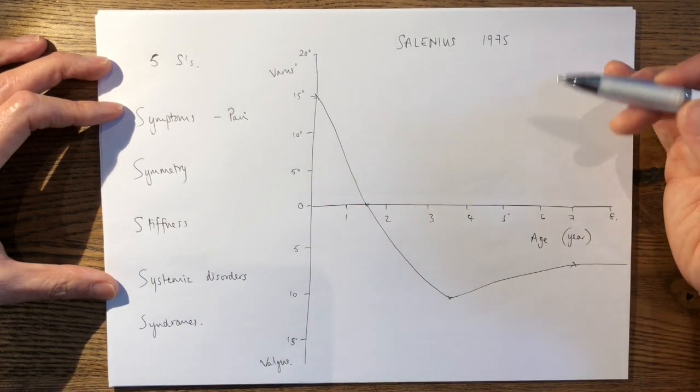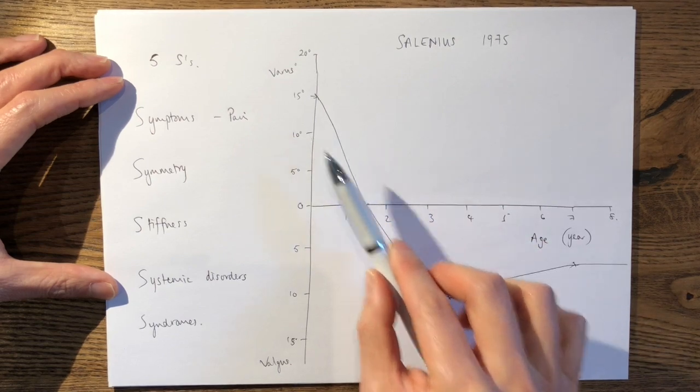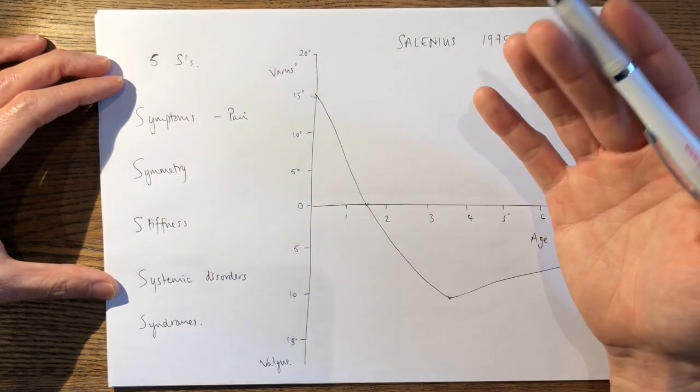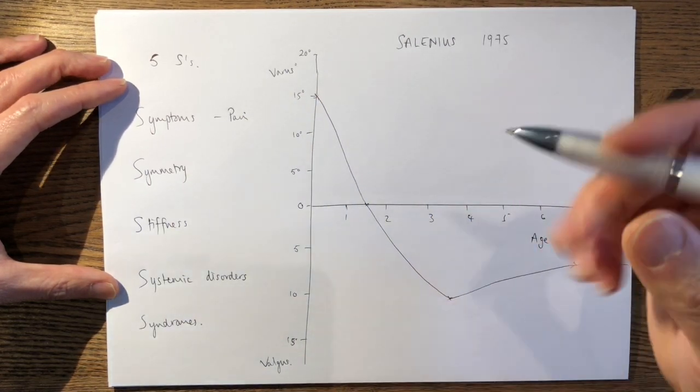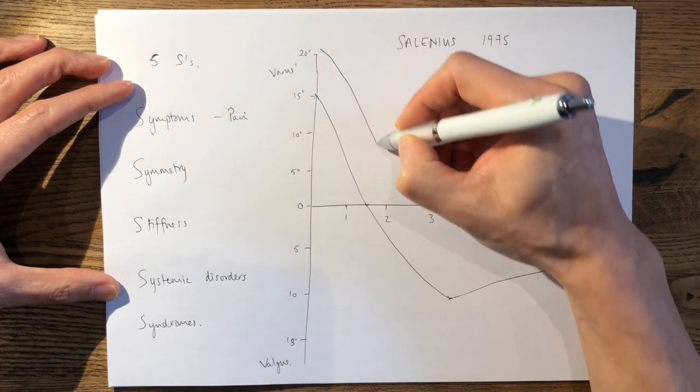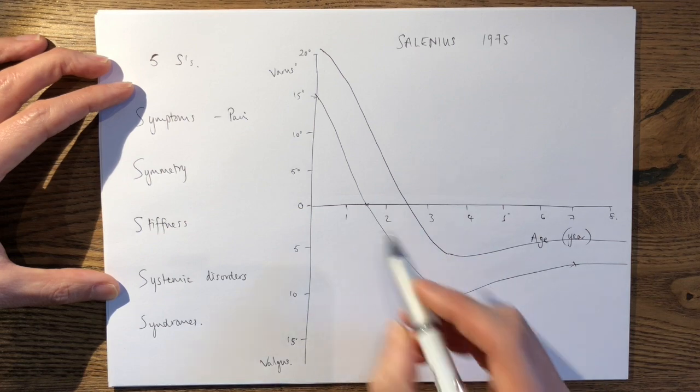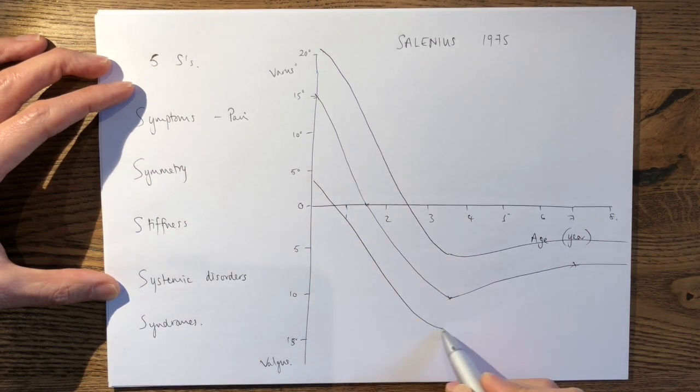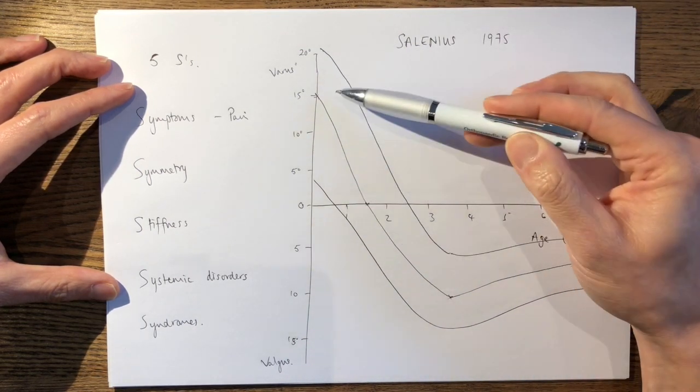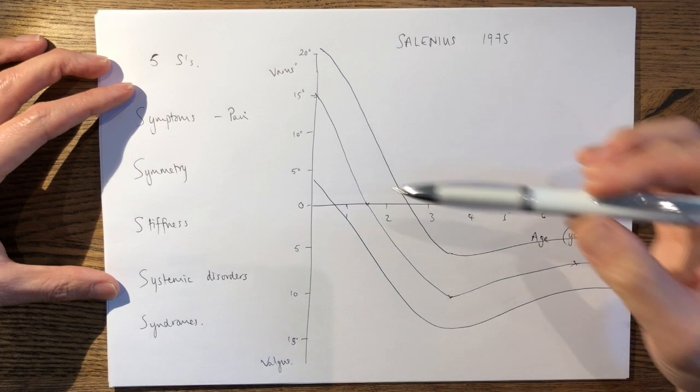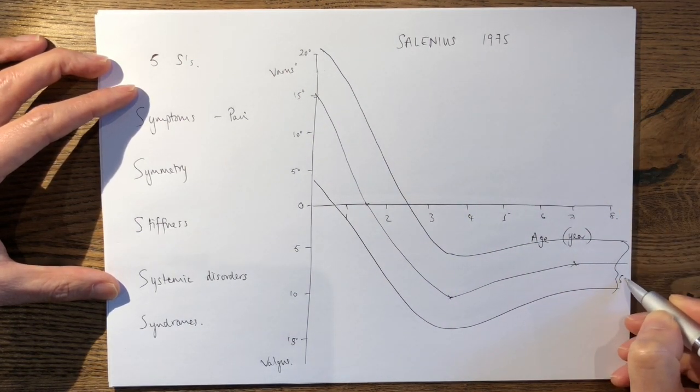Now it's also important to explain to the examiner that there will be a variation of what is considered normal, which represents as a standard deviation above what is normal and a standard deviation below. So this is where you draw two parallel lines around your Salineus curve, which is what you've already drawn, and explain to the examiner that within these two standard deviations, this still represents normal. So here are your two standard deviations.